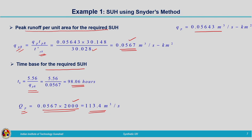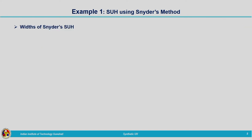Two more parameters are required: widths at 50% and 75% of peak discharge. Using Snyder's formulas with coefficients 2.14 and 1.22 respectively, substituting qPR = 0.0567, we calculate W75 = 27.07 hours and W50 = 47.48 hours. This completes the parameters needed for the synthetic unit hydrograph.